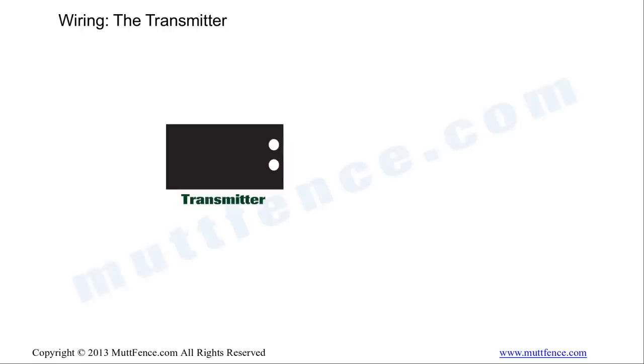On the right side of the transmitter here, there are two white dots representing the terminals that you'll connect the wire to. You can think of one terminal as send, one terminal as receive, and the fence has to form a loop from the send terminal to the receive terminal of the transmitter. We'll build that picture as we go.